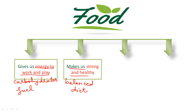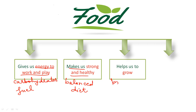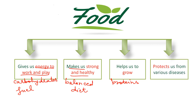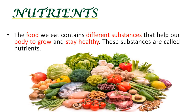Food helps us to grow — like proteins. Proteins help in the formation of new tissues. Along with this, vitamins and minerals are two important nutrients that protect us from various types of diseases.